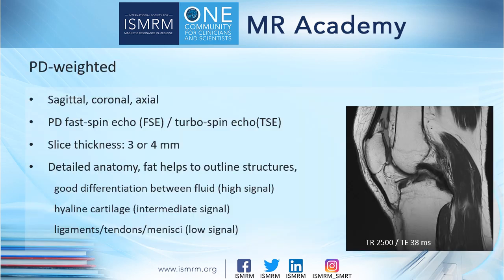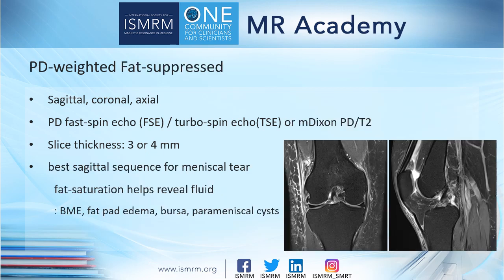The purposes of proton density-weighted images are to delineate detailed anatomy. With fat suppression, it helps outline structures between small anatomic structures, with good differentiation between fluid at high signal intensity, hyaline cartilage at intermediate signal intensity, and ligament, tendon, and meniscus showing low signal intensity. Fat-suppressed proton density-weighted image is the best sagittal sequence for detecting meniscus tears. It also reveals T2-high-signal regions and fluids such as bone marrow edema, fat pad edema, bursa, and parameniscal cyst.